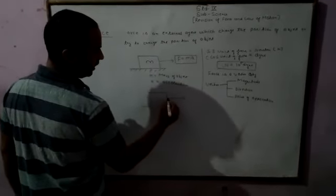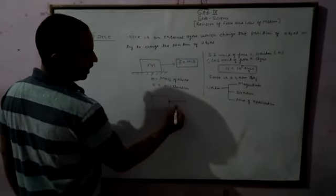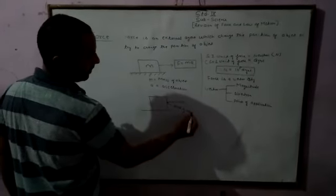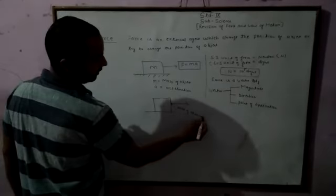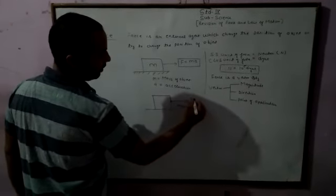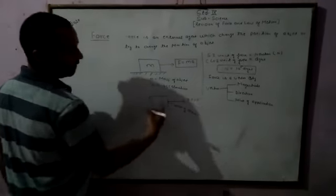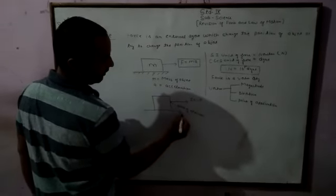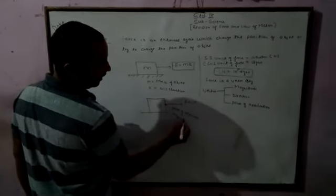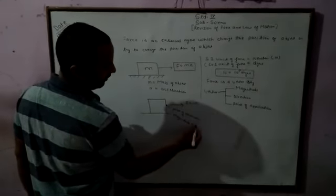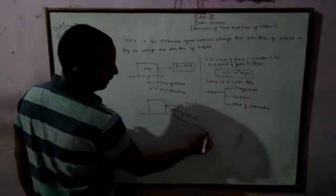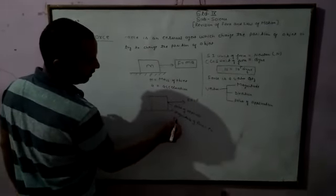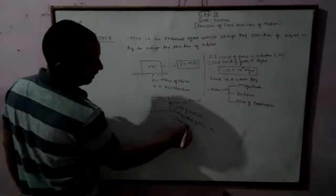If a force is acting in this direction, this is the point of application. Suppose a 5 newton force is acting on this particle. Hence we can say that the magnitude of the force is 5. Magnitude of force equals 5 newton. And what is the direction? East direction.